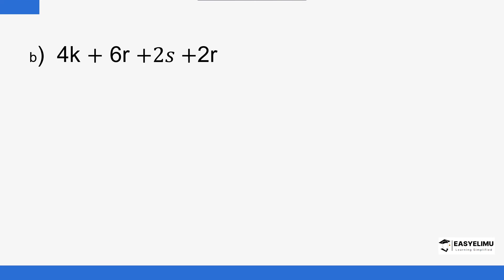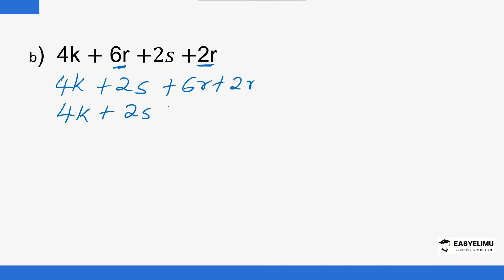For the second example, 6r and 2r are like terms so we collect them together. We have 4k plus 2s plus 6r plus 2r, which gives us 4k plus 2s plus 8r. Looking at all three terms, they have a common factor — the highest common factor, the GCD here, is 2. So we divide all the terms by 2.